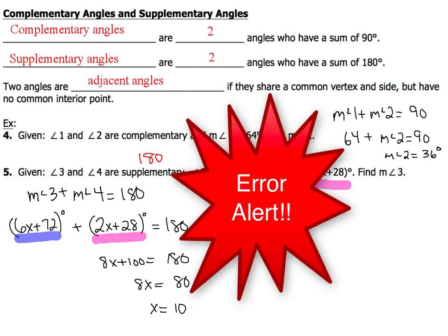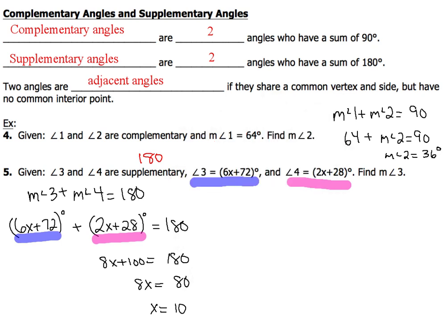So, common error right here is for people to stop because they think they're finished. Sadly, you are not. You must go back and find the measure of angle 3. So, make sure you re-read the question to figure out the piece of information you're being required to find.